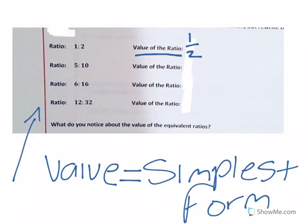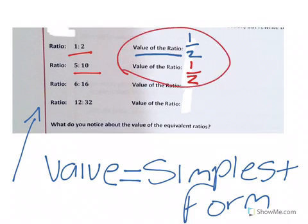If we look at the next ratio, which is 5 to 10, if we write that as a fraction, we're looking at 5 tenths. We know you can divide both of those by the magic number of 5. 5 divided by 5 is 1, 10 divided by 5 is 2. The value of that ratio is also 1 half. So if you look at 1 to 2 and 5 to 10, those ratios are equivalent because they both have the same value. The value of both is 1 half.